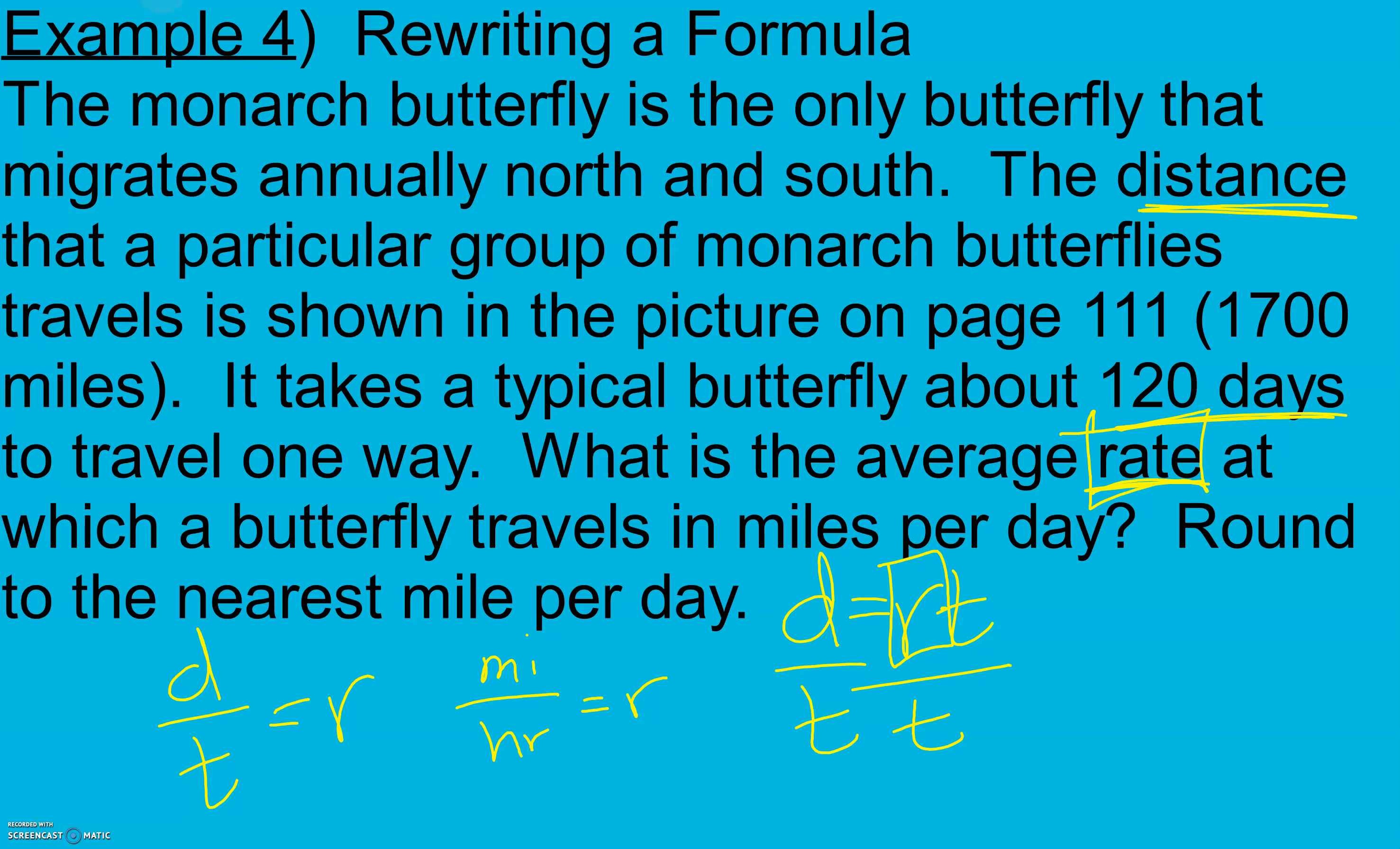So we're going to plug in what we know. We know that the distance is 1,700 miles and the time is 120 days. And that's going to give us our rate. We want it in miles per day. And the 1,700 is in miles and the 120 is in days. So that's perfect. We have miles over days just like we want.